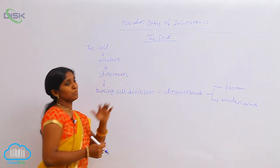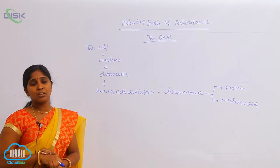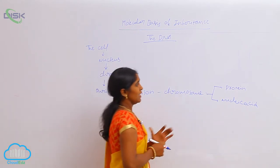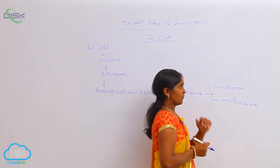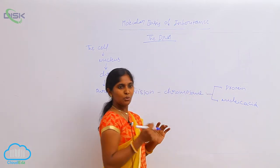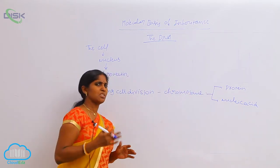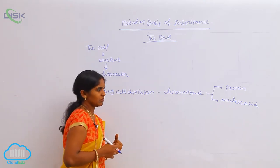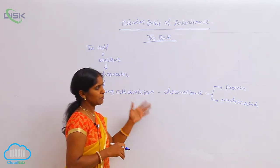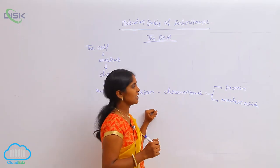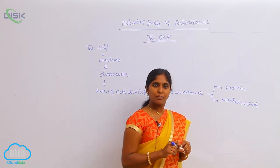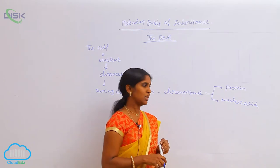Inheritance is completely based on nucleic acid. Previously, scientists got the idea about proteins and concluded that proteins are the inheritance material, but recent discoveries have shown that nucleic acids act as the inheritance material and genetic material.